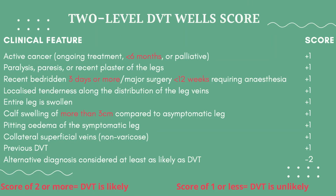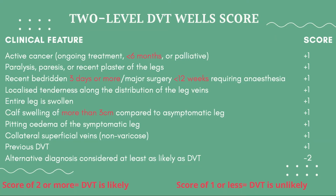Before we move on to treatment, patients are scored using the 2-level DVT Wells score, and management very much depends on the score received. Clinical features assessed include: active cancer, paralysis or paresis or recent plaster of the legs, recent bedridden three days or more, major surgery within the previous 12 weeks requiring anesthesia, local tenderness along the distribution of the leg veins, entire leg swelling or calf swelling more than 3 cm compared to the asymptomatic leg — measured 10 cm below the tibial tuberosity — pitting edema of the symptomatic leg, collateral superficial non-varicose veins, previous DVT, and if an alternative diagnosis is considered at least as likely as DVT, you would subtract 2 points from the total score.